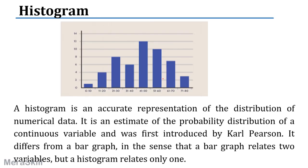A histogram is like a bar chart, but it is continuous. The intervals are consecutive: 0 to 10, 11 to 20, 21 to 30, 31 to 40, and so on. It shows the probability distribution of a continuous variable — called a continuous distribution. For example, there may be 0 to 1 incident in the 0–10 range, 4 in 11–20, 8 in 21–30, 6 in 31–40, and so forth.